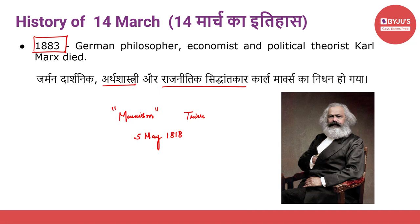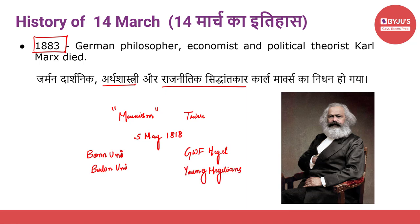He went to the University of Bonn at the age of 17 to study law on his father's demand, although he was more inclined to philosophy and literature. Marx became involved in controversies and transferred to the University of Berlin. He was deeply interested in the philosophy of G.W.F. Hegel and was involved in a radical thinkers group called the Young Hegelians. He completed his doctoral thesis in 1841 and was awarded a PhD by the University of Jena, which was more liberal than Berlin University.